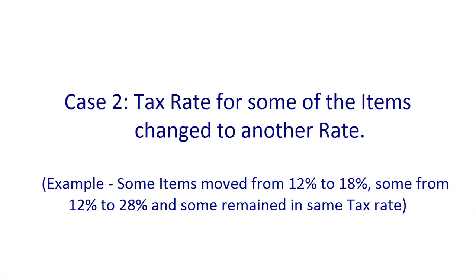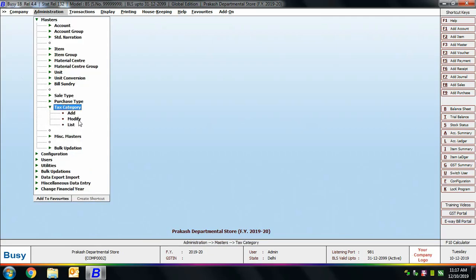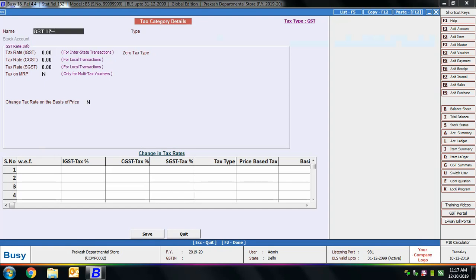Now we discuss Case 2: tax rates for only some items change to different rates. For example, some items at 12% move to 18%, some move to 28%, and some remain at 12%. In this case, we do not modify existing tax category masters; instead, we create new ones. We go to Tax Category Add and create a category named 'GST 12 to 18%' for items moving from 12% to 18%.